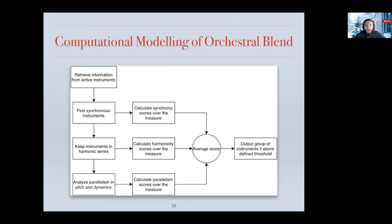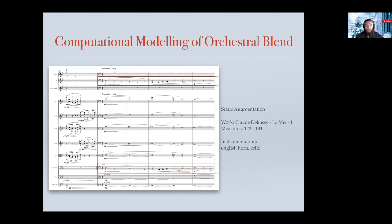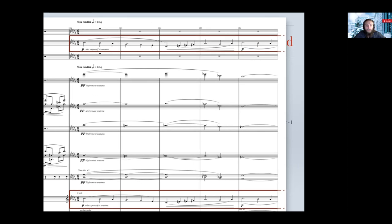Here I'm showing you a synopsis of our orchestral blend estimation algorithm. We do estimation measure by measure. The first step is to retrieve the information of the active instruments for a given measure. Then we look if there are instruments playing in synchrony — for that we compare the onset of every note, and depending on the decision threshold, we keep groups of instruments that play in synchrony. Using the example from the first movement of Debussy's La Mer, comparing the notes of the English horn and the cello, we can see that they are all playing in synchrony, and they get a score of 100% due to all notes having the same onset.